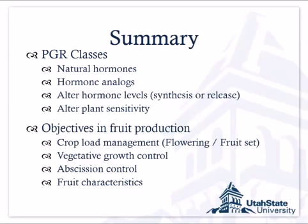In summary, plant growth regulator classes include natural hormones, hormone analogs, materials that alter hormone levels, and materials that alter sensitivity. These are used to regulate processes including flowering, fruit set, vegetative growth, abscission, and fruit characteristics.